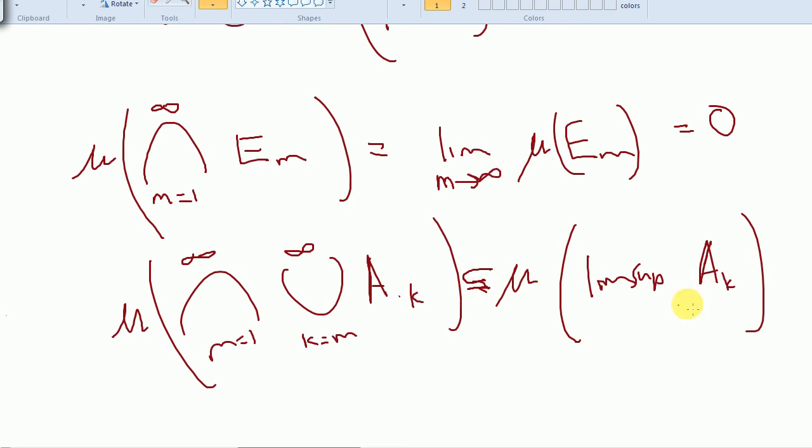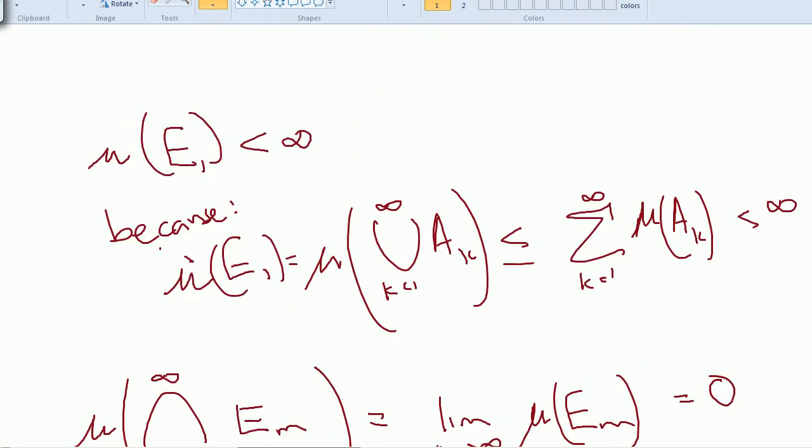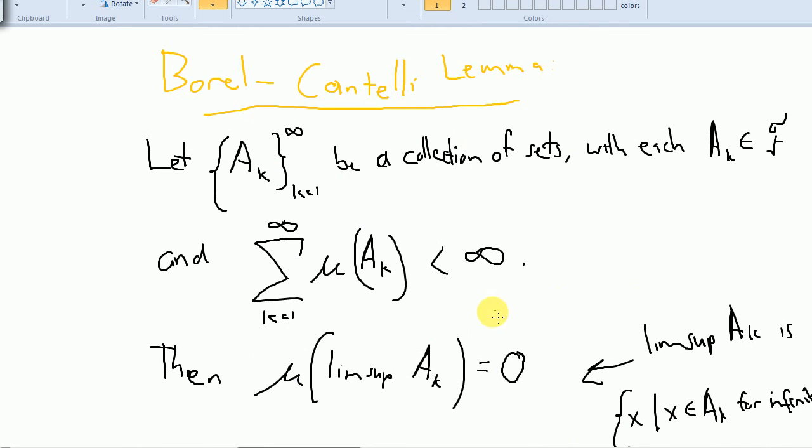To get the other direction, we just need to show that if it is in A sub K infinitely many times, then certainly this is going to be true as well. Because if it's in A sub K infinitely many times, then no matter what M is, it's going to be in the union from K equals M to infinity. If it stops at M, then it can't be in there infinitely many times. It has to be in there, no matter what M is. So that's how we get our equality. In fact, these two sets are the same set. They're really defined almost the same way. Just one is in terms of unions and intersections. So they're different ways of looking at the same thing. Alright, so that's the Borel-Cantelli Lemma. That's all I'm going to do for this video. Just a quick proof. And that was relatively painless.